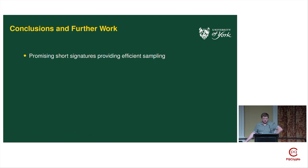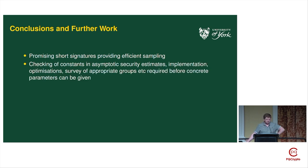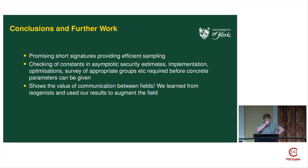To summarize: we've got promising short signatures providing efficient sampling. We still need to check the constants in the asymptotic security estimates and do implementation work before we can state final parameters. On a philosophical note, insofar as post-quantum cryptography has existed as distinct camps since 2016, this is a good example of what happens with dialogue between camps — we wouldn't have known how to make these signatures without the isogeny literature, and in return we've solved a sampling problem from the isogeny literature.